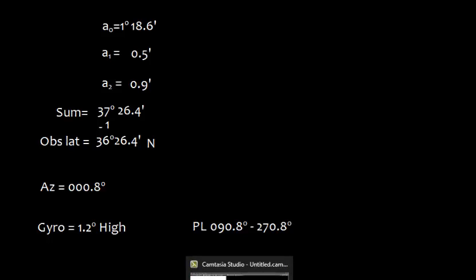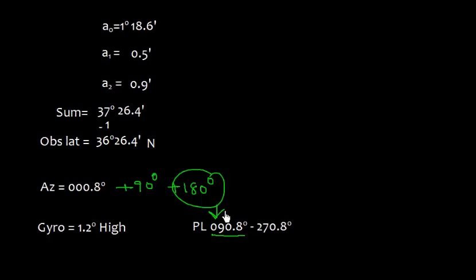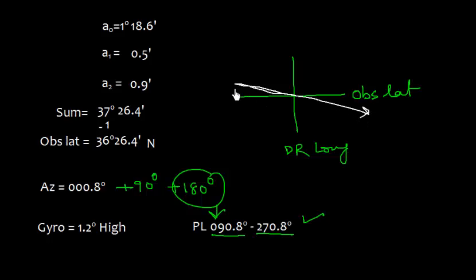The position line can be worked out by taking 000.8 degrees and adding 90 degrees to get 090.8 degrees, then adding 180 degrees further to get 270.8 degrees. A rough sketch: this is the observed latitude, this is the DR longitude, and the position line is 090.8 degrees. The azimuth of Polaris is 000.8 degrees, less than a degree. This is just a rough sketch to explain the concept.